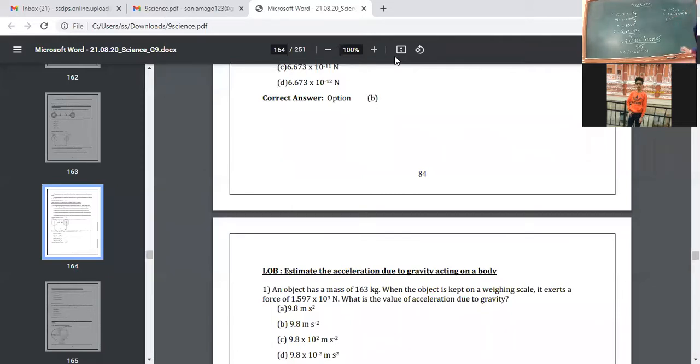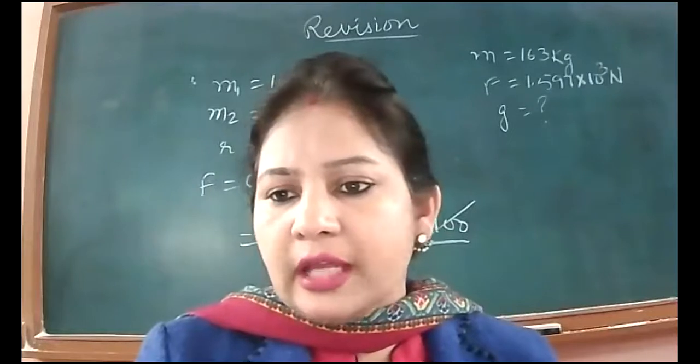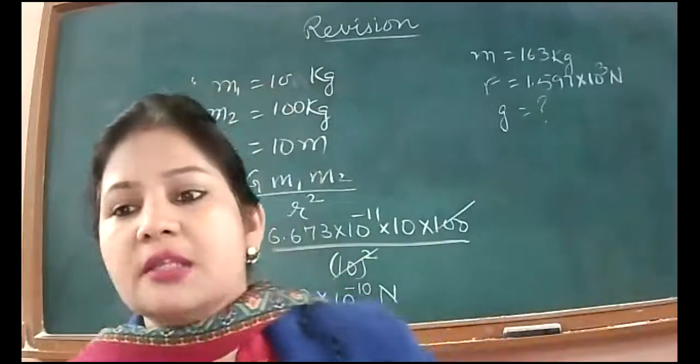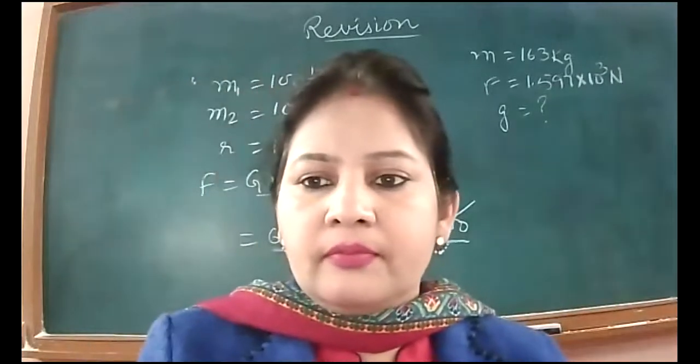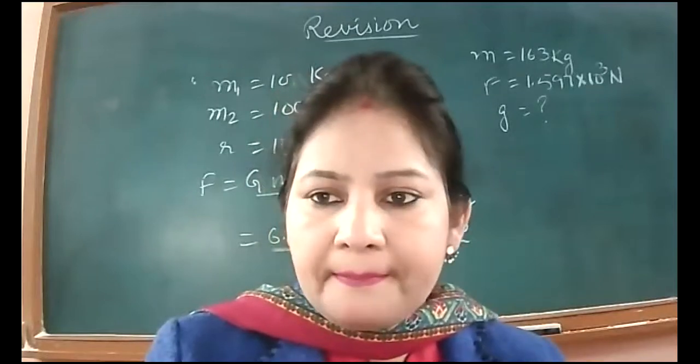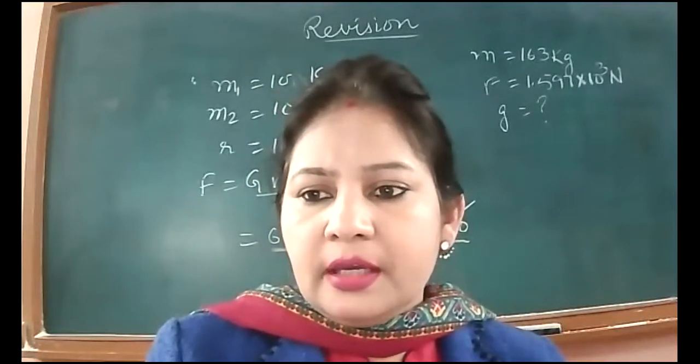Let's note down the data. Mass is 163 kg, force is 1.597 into 10 raised to power 3 Newton. We are to find G. Who will tell me which formula we will use to calculate small g here when force is given, mass is given to you?